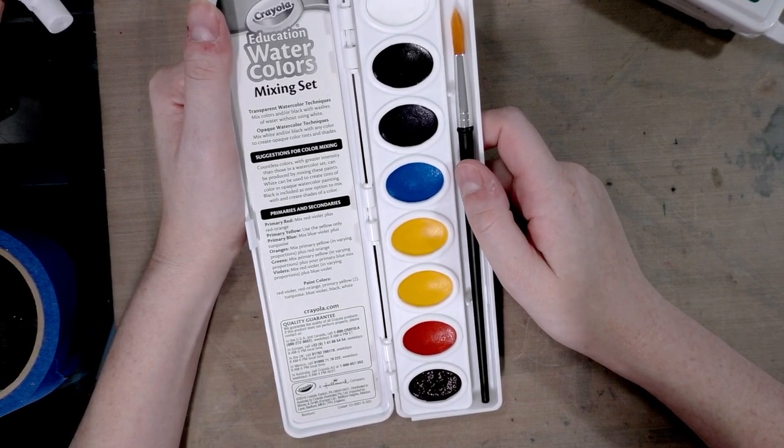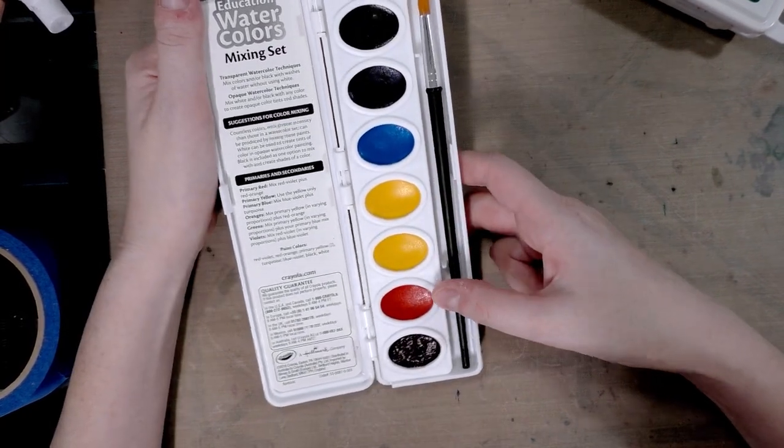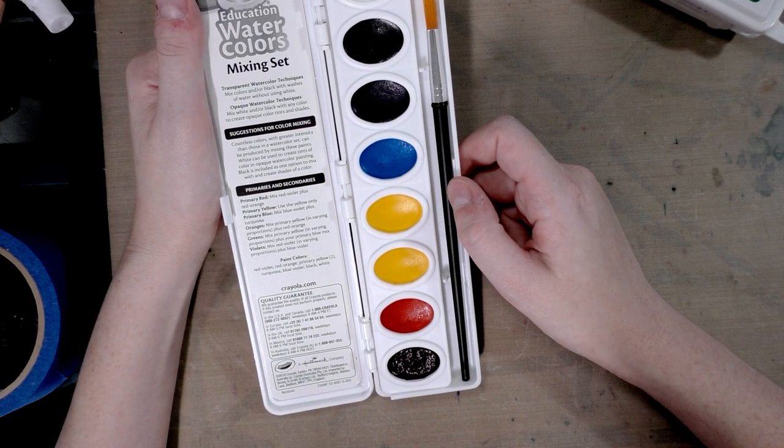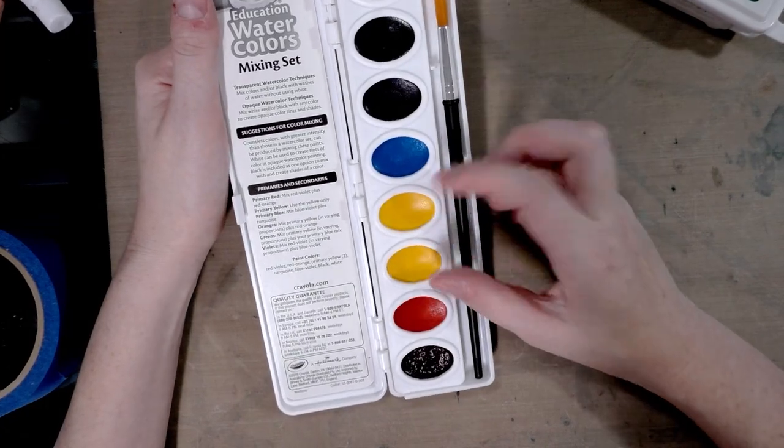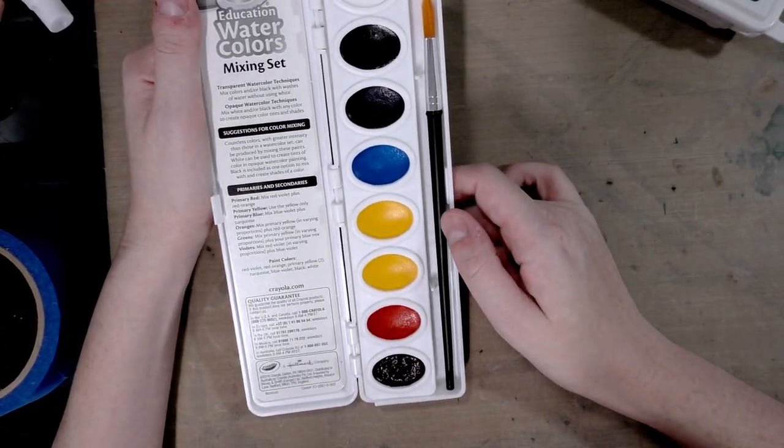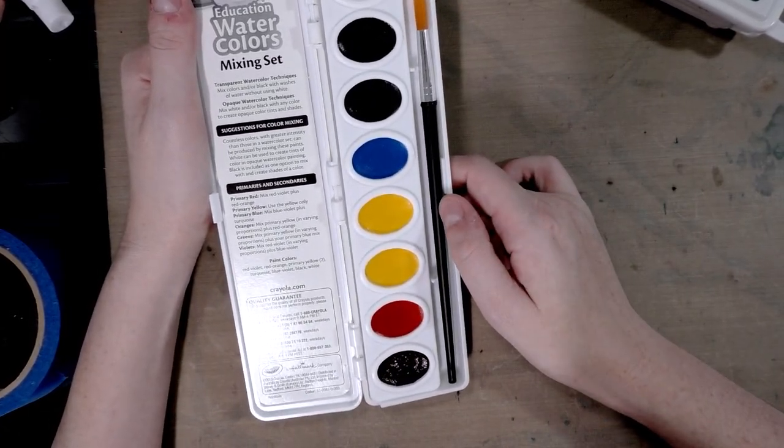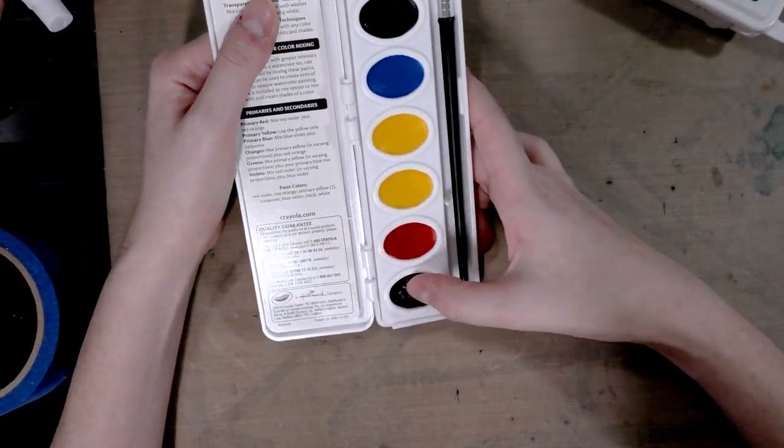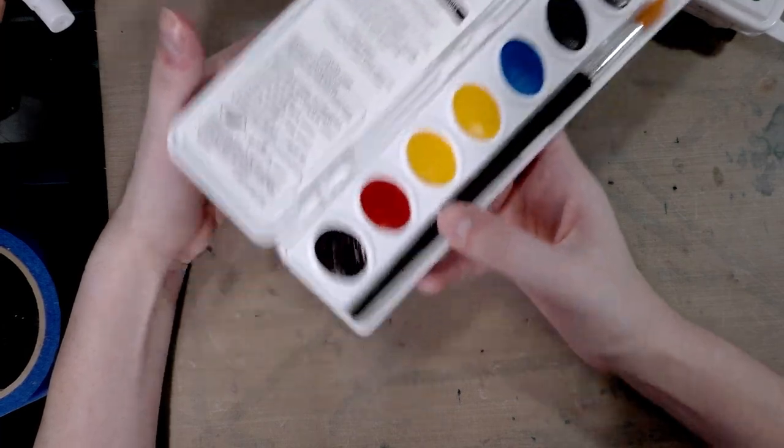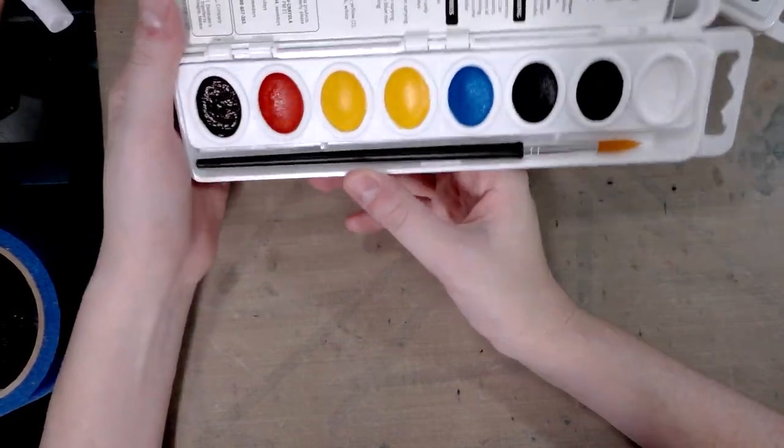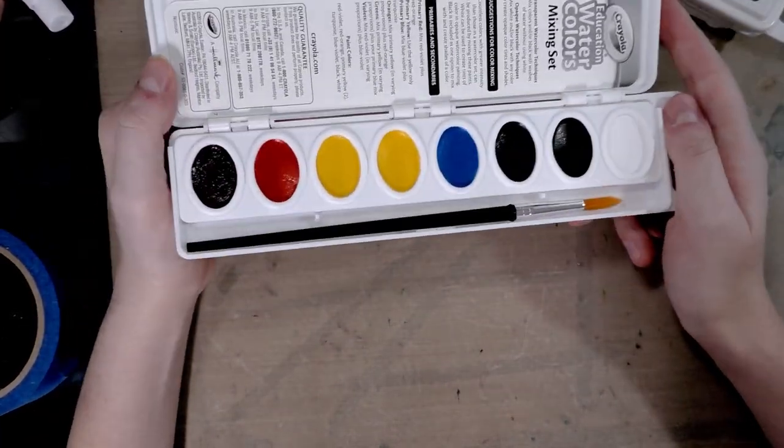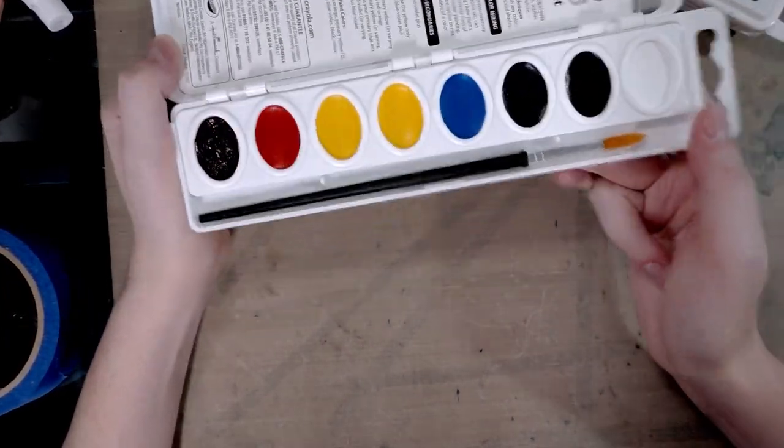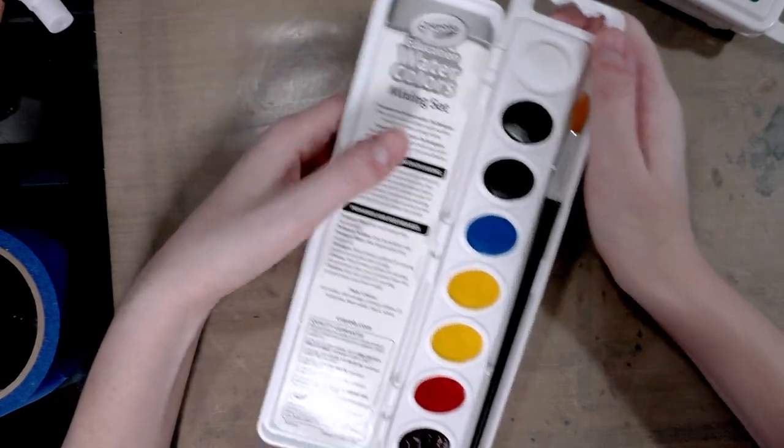Oranges: Mix primary yellow in varying proportions plus red orange. Greens: Mix primary yellow in varying proportions plus your primary blue mix. So these two mix with a yellow. Violets: Mix red violet in varying proportions plus blue violet. So this actually seems like it might be a very versatile set and these are not as smooth and shiny as Crayolas tend to be when brand new. So it gives me hope that there's not like a boatload of glycerin and we might get some pigments.